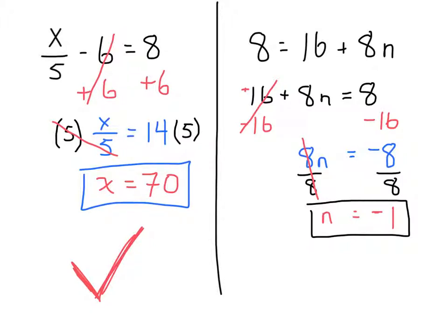To double check, plug the answer into the equation. Negative 1 times 8 equals negative 8, and 16 plus negative 8 equals 8. So n equals negative 1 is correct.